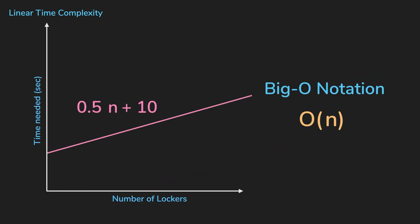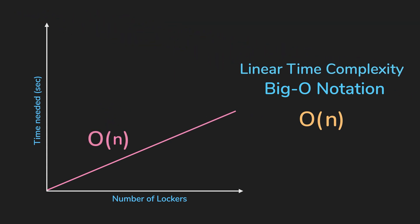So in summary, when we are talking about big O notation, the coefficients or constants don't matter. It's just O of N. We call this linear time complexity.